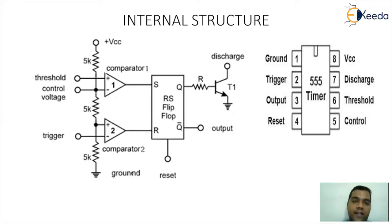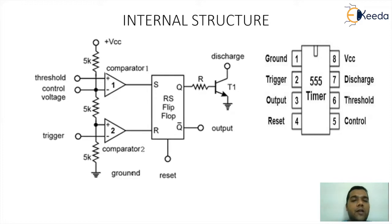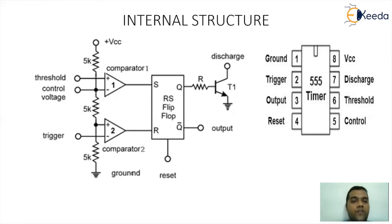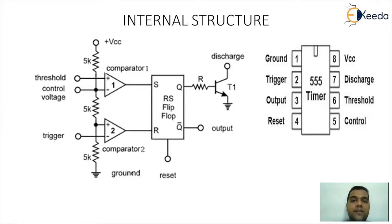Internally inside the structure, you will have three resistances each of 5K and the voltage will come externally from the VCC supply. Normally we try to keep the VCC value at 5 volts. Now let's understand how the comparators will generate their reference voltages. We have VCC at the top and three resistances each of 5 kilo ohm — 5K, 5K, and 5K. The drop across every resistor will be one-third of VCC. Looking at the lower comparator, since there are two comparators — upper and lower.